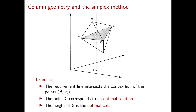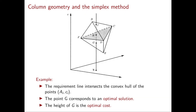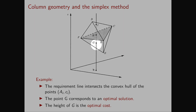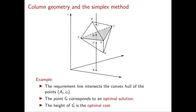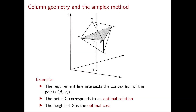Let's immediately see an example. In this picture we have m equal to 2 because this is a three-dimensional space, and we have n equal to 5. The five points ai,ci are b, f, e, d, and c. The vector b is over here so this is the requirement line. The convex hull of my five points is the polytope drawn in the picture, and clearly the requirement line intersects it, which immediately implies that the problem is feasible. An optimal solution corresponds to the lowest point in this intersection, which is the point g. From the picture we can also tell the optimal cost because it is the height of the vector g.